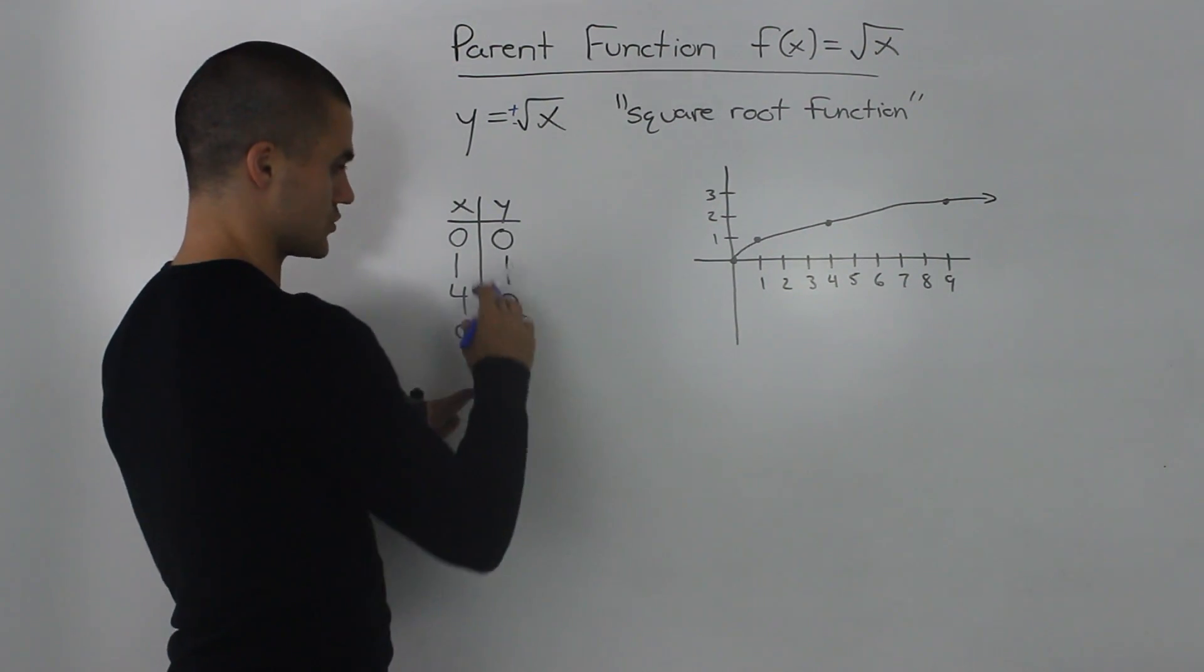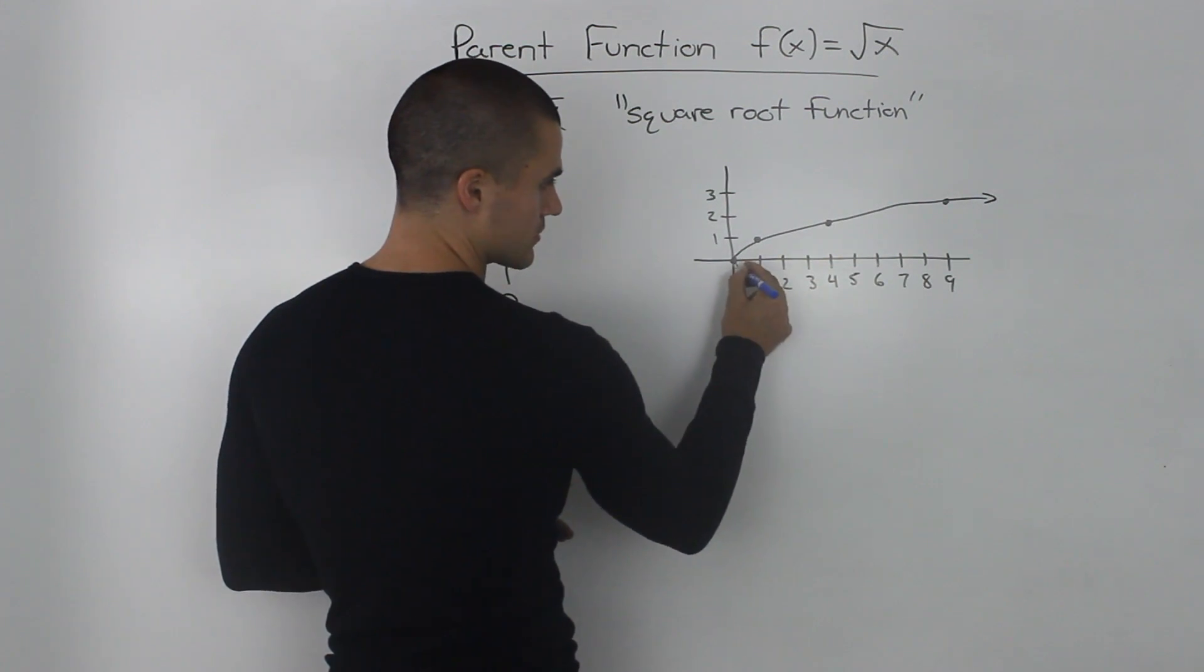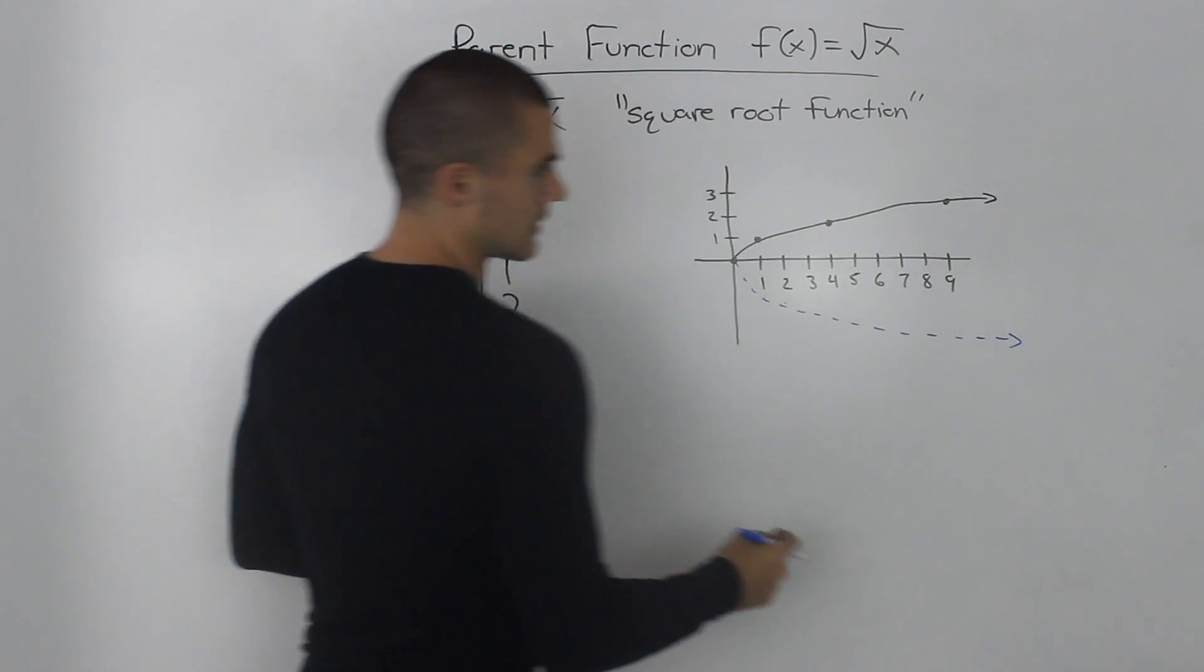And if we were to graph it like that then we would have these additional points down here. So the graph would look something like that.